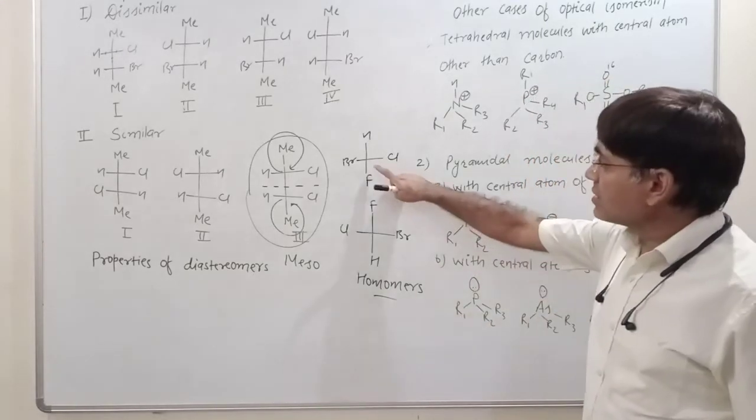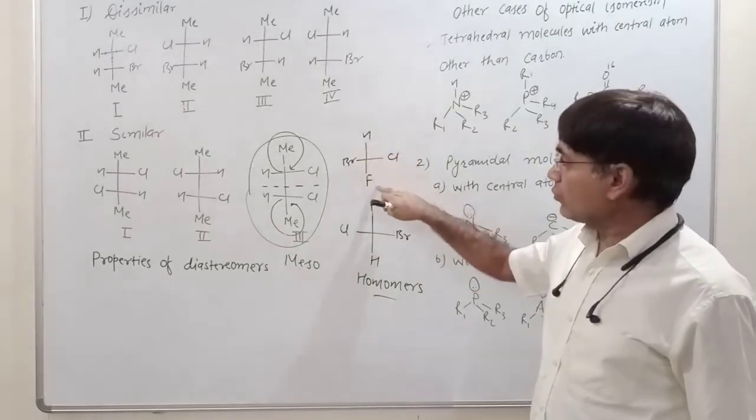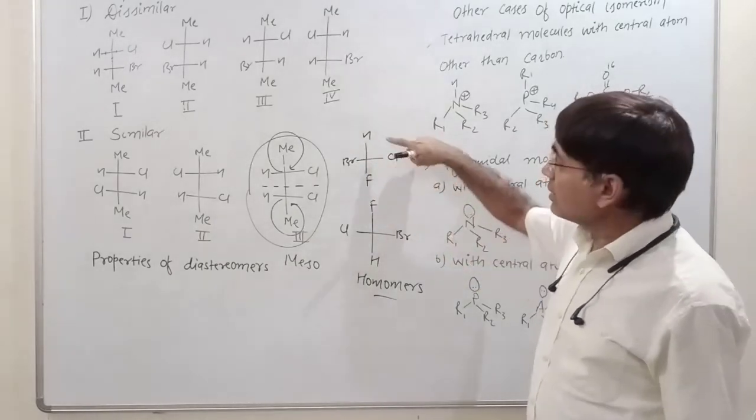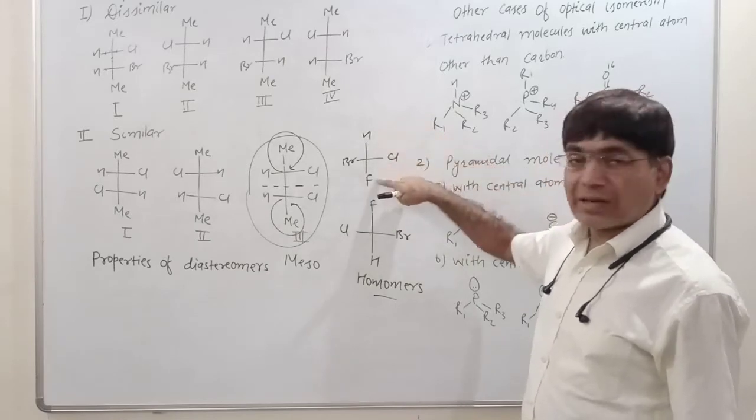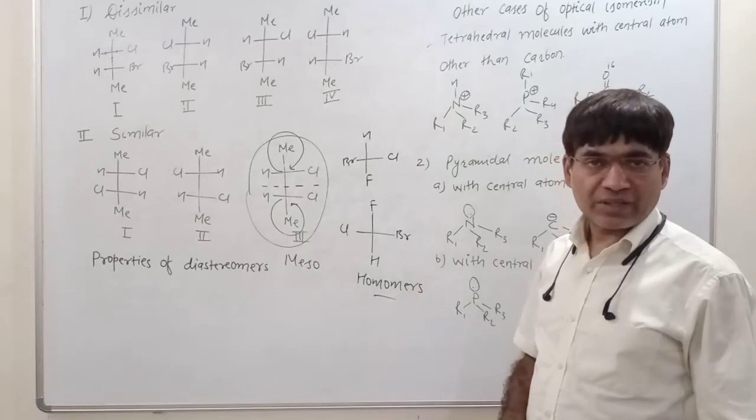For example, this molecule. What is carbon? Hydrogen, bromine, fluorine and chlorine. Now, where are we using chlorine? From the vertical line, it's the bromine and fluorine. Where are we from? Horizontal line.